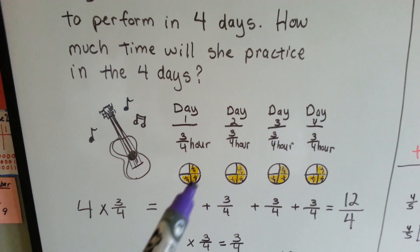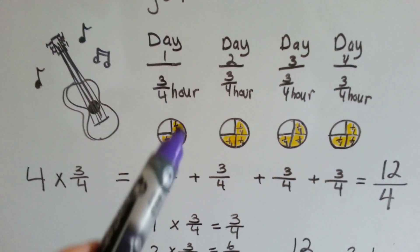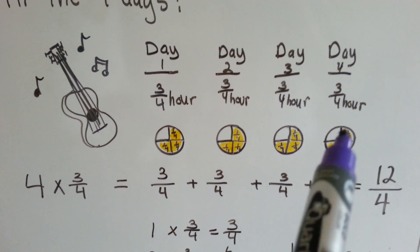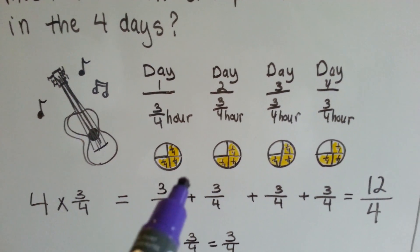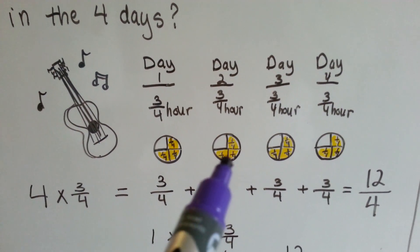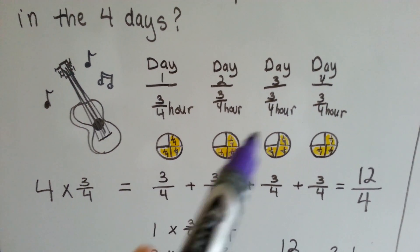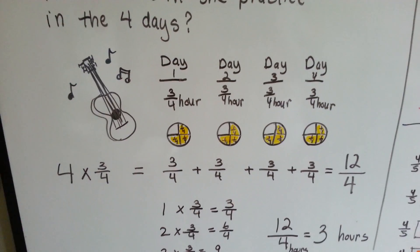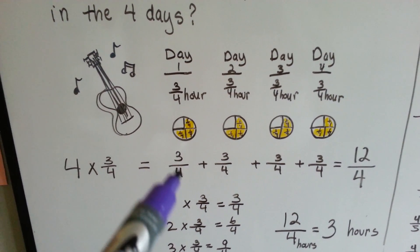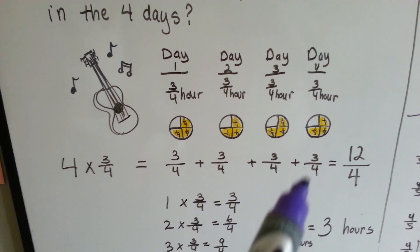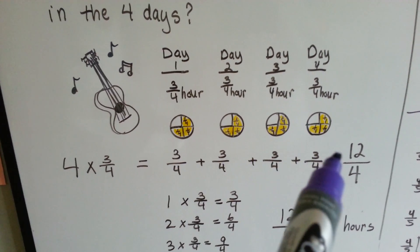Here's a circle representing an hour, and it's split into fourths with 3 highlighted — that's the 3 fourths for each day. Using a model, we could just count them: 1 through 12, giving us 12 fourths. The other way would be to say 3 fourths plus 3 fourths plus 3 fourths plus 3 fourths, which still gives us 12 fourths if we add the numerators.